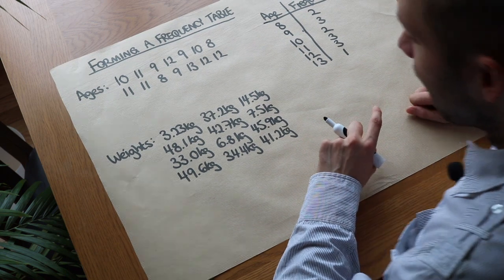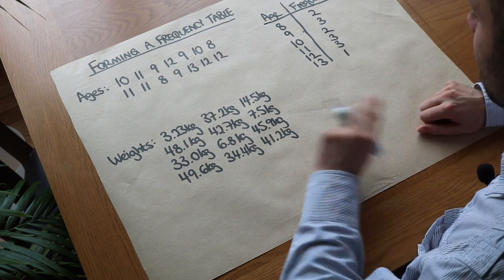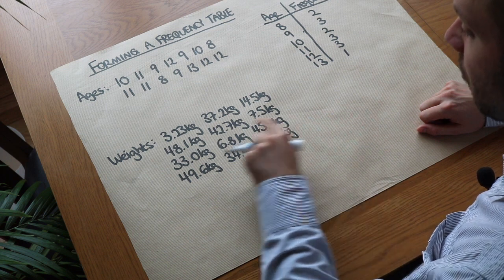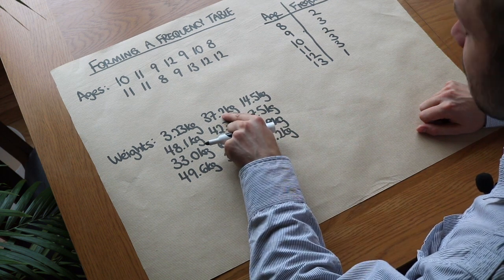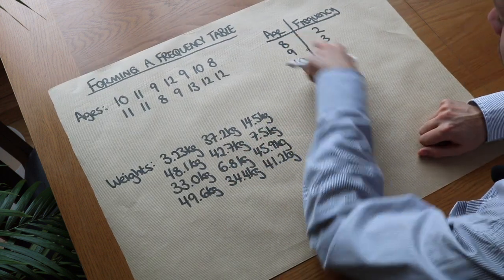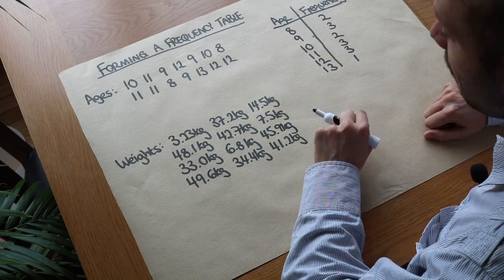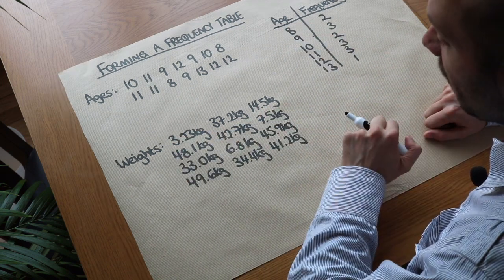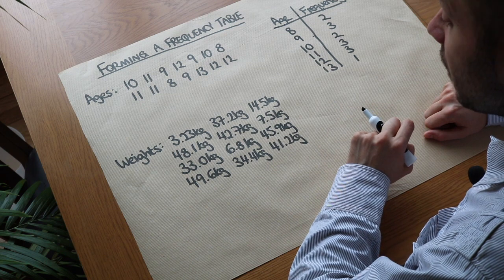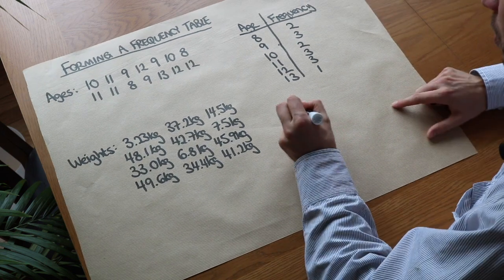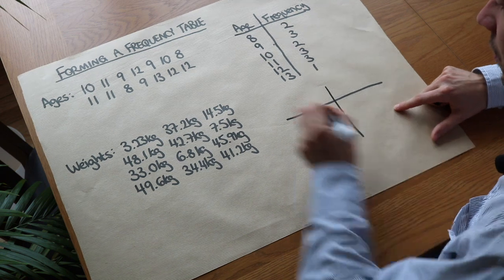Now the problem is when you have things like weights and heights. If you were to record them really accurately you might have lots of decimal places. So if you try to form a frequency table in the same way it might be that you only see each weight once if you've measured it really accurately. So what we might do is we might group these weights into intervals.